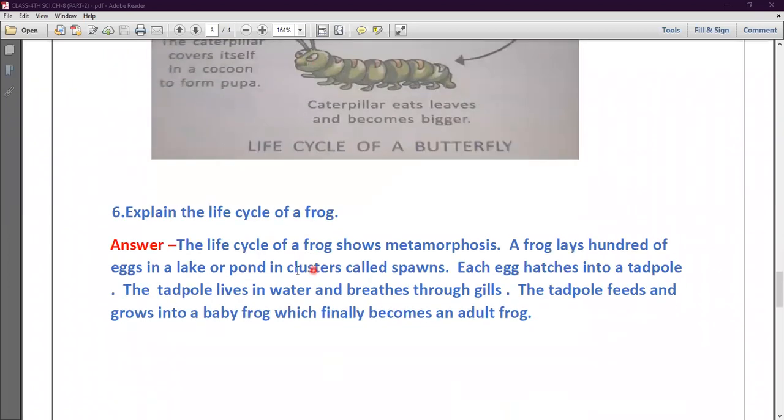Now next question number six is explain the life cycle of a frog. So the life cycle of a frog shows metamorphosis. A frog lays hundreds of eggs in a lake or pond in a cluster called spawn.